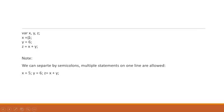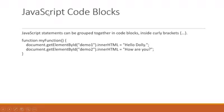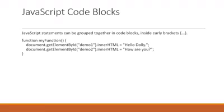The next topic is JavaScript code blocks. Code blocks are a collection of statements. For example, this is a function that contains many statements — so this is a code block. In this example, document.getElementById('Demo1').innerHTML equals 'Hello Daily' — this is one statement. document.getElementById('Demo2').innerHTML equals 'How are you' — this is another statement. So this is a collection of two statements, and it is called a code block. It is used inside curly brackets — this is the opening curly bracket and this is the closing curly bracket.